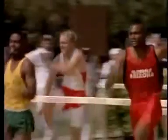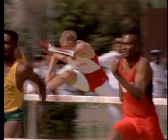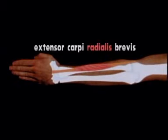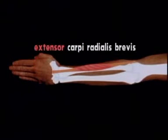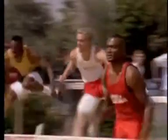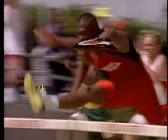Some 400 muscles make up nearly half the weight of your body. All your muscles have been given descriptive Latin names. The extensor carpi radialis brevis is a muscle in your arm. Brevis means it's short, radialis refers to the radius — the bone it's attached to, carpi refers to the carpals, wrist bones at the other end, and extensor means that it extends or straightens the wrist.